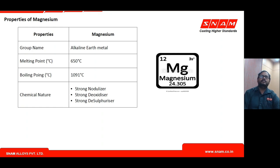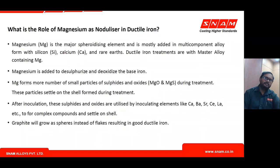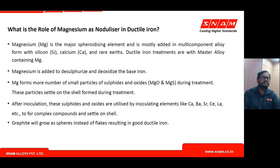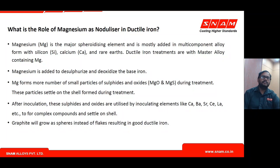As the primary nodulizing element, magnesium desulfurizes and deoxidizes the metal, since cast iron-based metal contains oxygen and sulfur in varying levels. Magnesium also reacts with silicon present in the metal and in the alloy to form silicates. These compounds together form the substrate upon which graphite starts precipitating and growing.